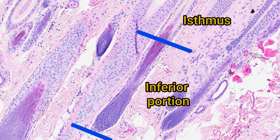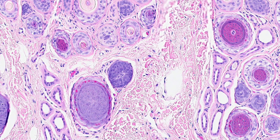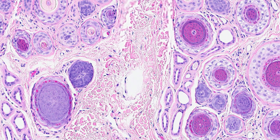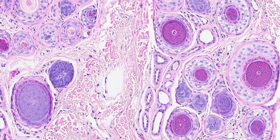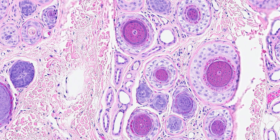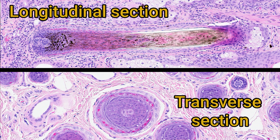The inferior portion extends from this junction to the hair bulb at the bottom of the hair follicle. The appearance of the hair follicle changes depending on whether the hair is actively growing or not. Let's start with the appearance of a hair follicle in anagen phase, the active growth phase, so most of the features of the hair follicle are visible. Most of the images shown are transverse sections through a hair follicle.